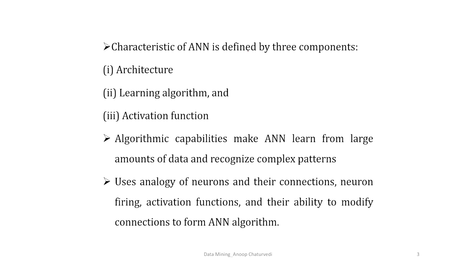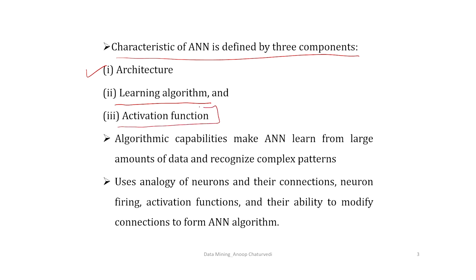The characteristics of ANN are defined by three components. The first one is architecture, which includes the input layer, hidden layers where computation occurs, and an output layer. Second, it is defined by the learning algorithms used for training the ANN. Third, it involves the activation function, which plays a very crucial role in artificial neural network.